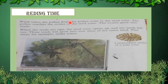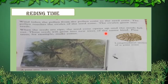Wind takes pollen from the pollen cones to the seed cones. The pollen reaches the ovule of the seed cones. The ovules grow into seeds. When the seeds are ripe, the seed cone opens up and the seeds fall out. These seeds will grow into new trees of the same kind, for example pine trees, which are made by pollen cones and seed cones. Here you can see a longitudinal section of a pine cone.